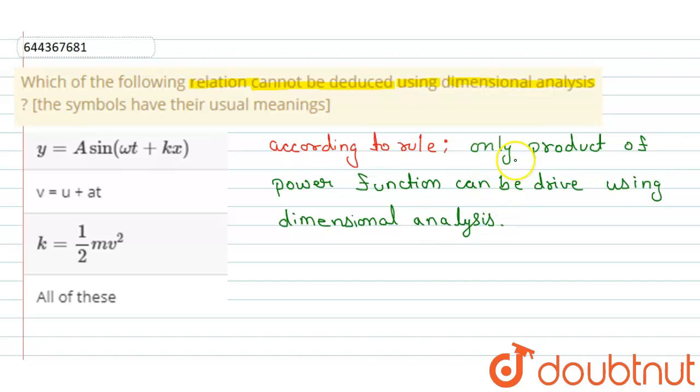Okay, so only the product of power functions can be derived using dimensional analysis. So let's check option A. Here is y equals A sin(ωt + kx). These are in product, but in this case ωt plus kx has the summation operation, so we cannot deduce them using dimensional analysis.